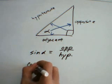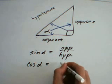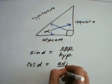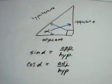The cosine of the angle is equal to the length of its adjacent side divided by the length of the hypotenuse.